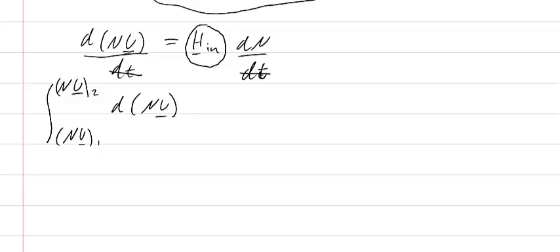And then on the other side I can take my enthalpy out front, because it's constant, and then I'm just integrating from N1, I'm doing I's instead of 1's here, so I'm integrating from N1 to N2, so my final number of moles in the system.